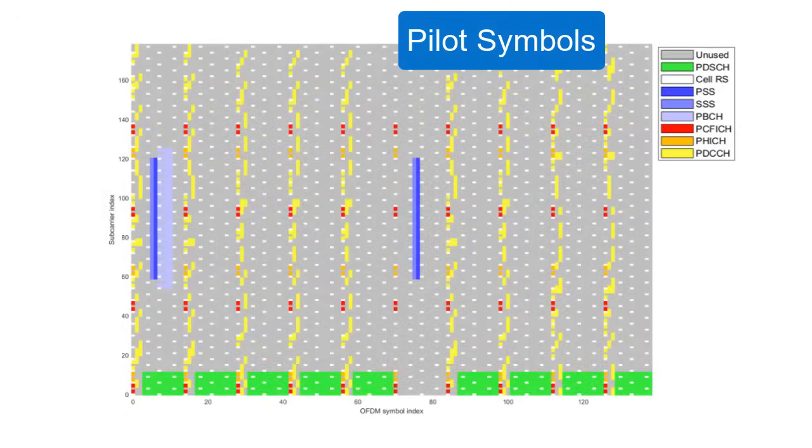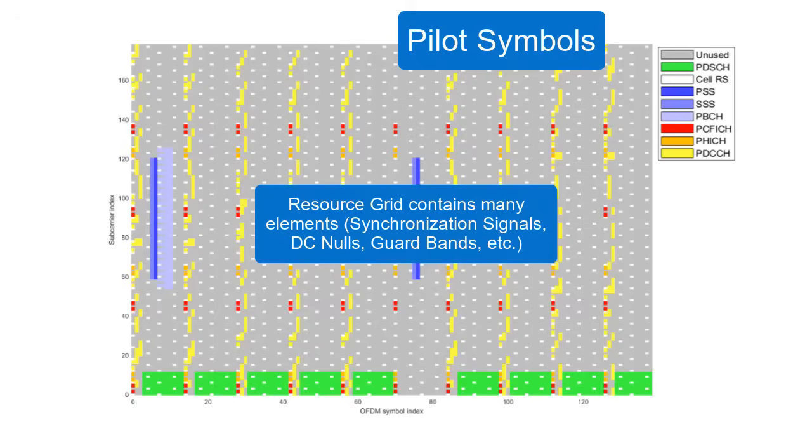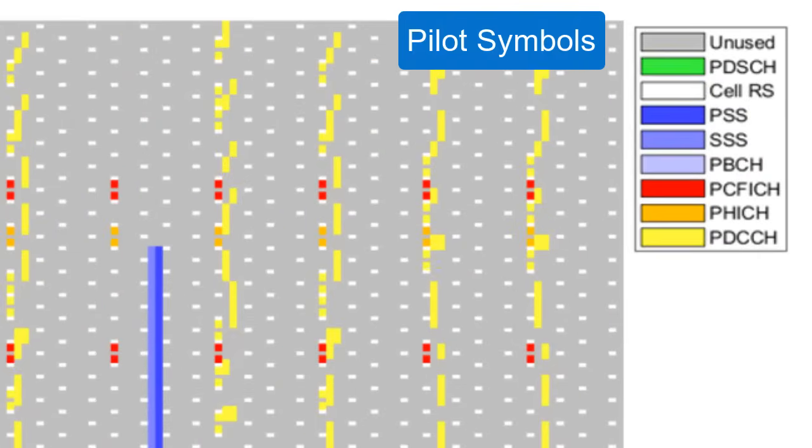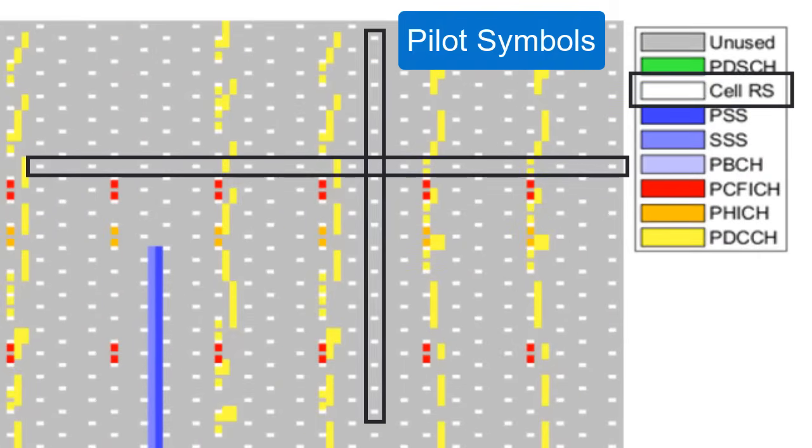Pilot symbols, also known as reference signals, are an important element in OFDM demodulation. Pilot symbols are one element of a resource grid, but there are other elements as well. In the following resource grid, the reference signals are represented by the white rectangles. These reference signals are known data that are inserted periodically in time and frequency to help with channel estimation and equalization later in the receiver.